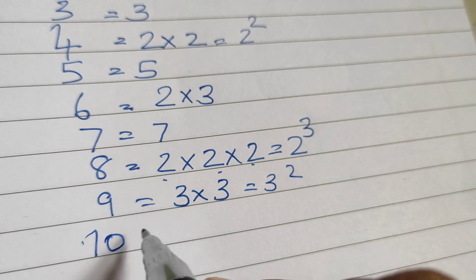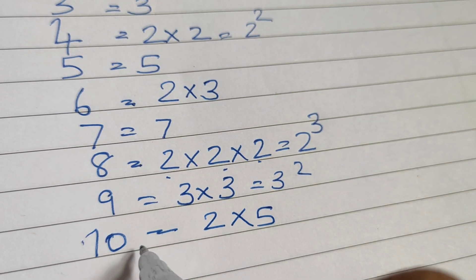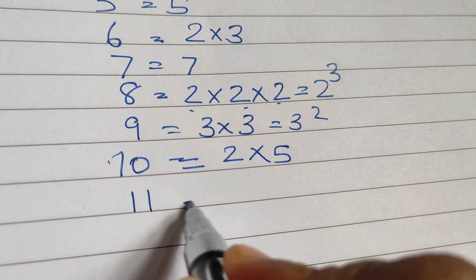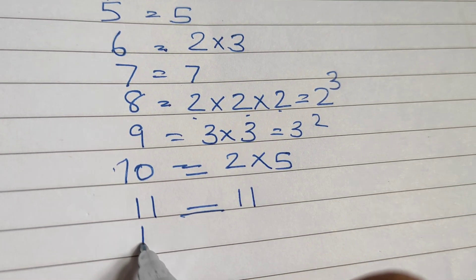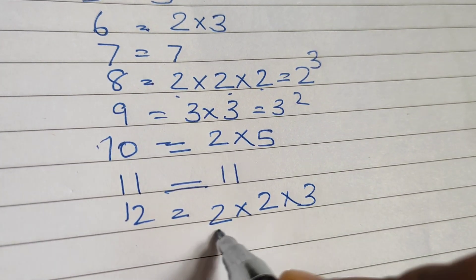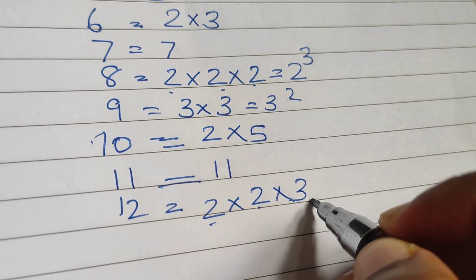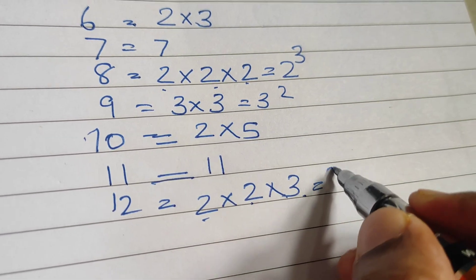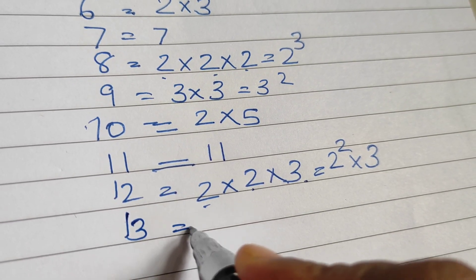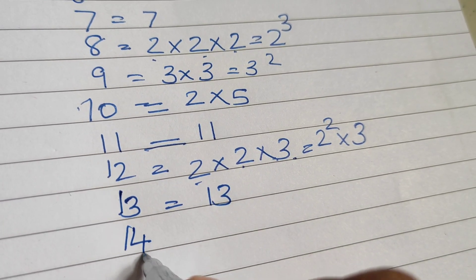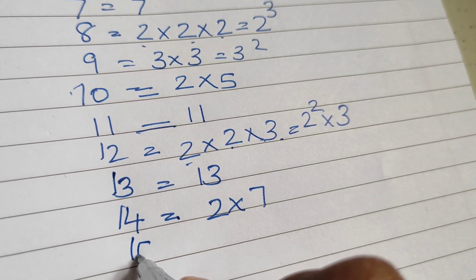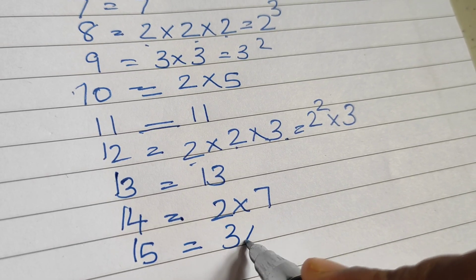10 is 2 into 5. 11 is a prime number. 12 is 2 into 2 into 3. 13 is a prime number. 14 is 2 into 7. 15 is 3 into 5.